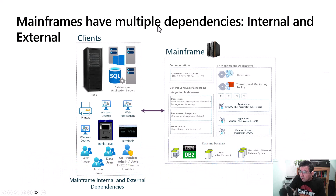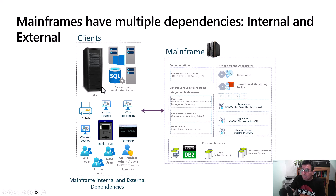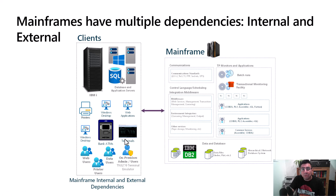Mainframes have multiple dependencies, internal and external. In this topology, I have highlighted the mainframe on the right side and the potential clients on the left side. You have all kinds of applications and database servers, IBMI systems or I-series systems, printers, desktop and web applications, terminals, and bank ATMs — they are all connected to a mainframe using SNA, TCP/IP, or HTTP.